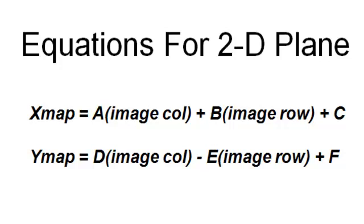Here are the equations we'll use to model geo-referencing. We predict for any pixel what its X and Y map coordinates are as a function of the original column and row and model coefficients. This is called the affine transformation — an equation for a two-dimensional plane. It assumes the landscape is flat, or that the sensor is far enough away that terrain relief displacement is minimal.